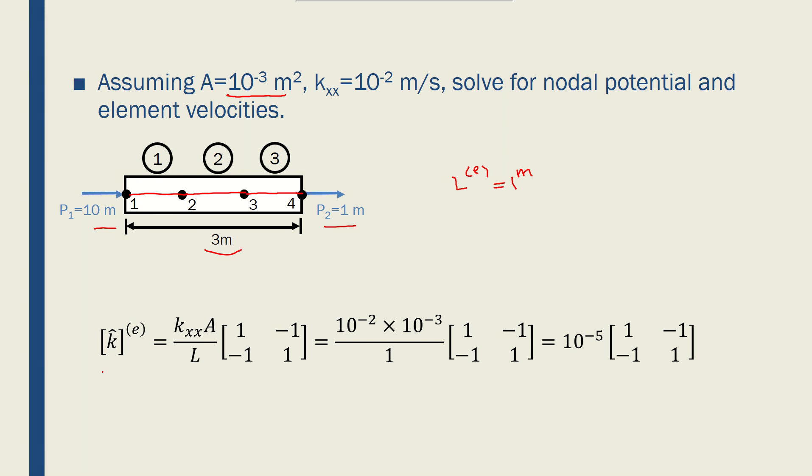We know that the stiffness matrix of a 1D fluid flow problem is kxx A over L times [1, -1; -1, 1]. It's a 2 by 2 because we have two nodes per element, and each node has 1 degree of freedom. If we put the values for permeability, cross-section, and length, we'll get this final form of the stiffness matrix for each of the elements.